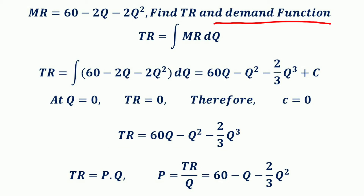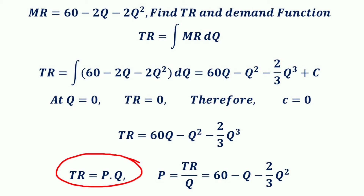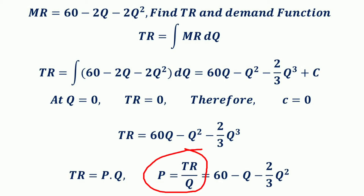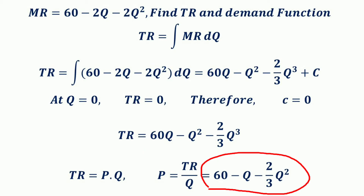Now we find the demand function, expressed in terms of price P. Since TR = P × Q, we have P = TR / Q. Dividing the total revenue function by Q gives the demand function: P = 60 − Q − (2/3)Q².